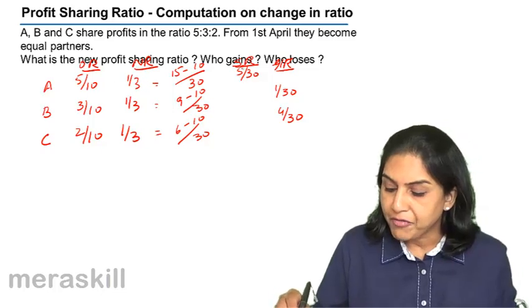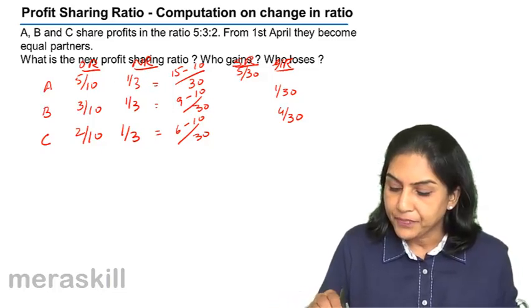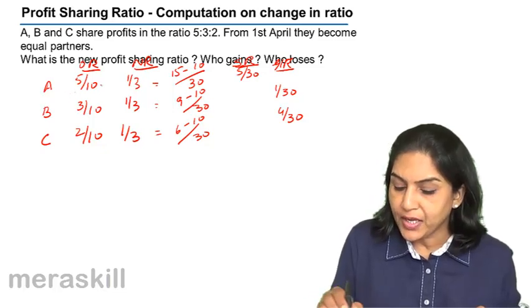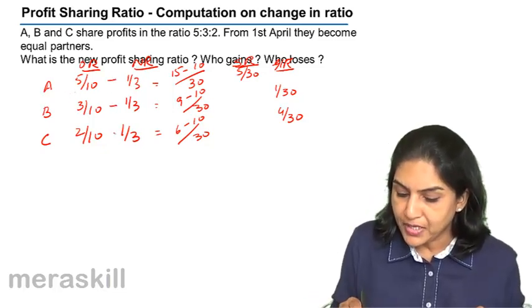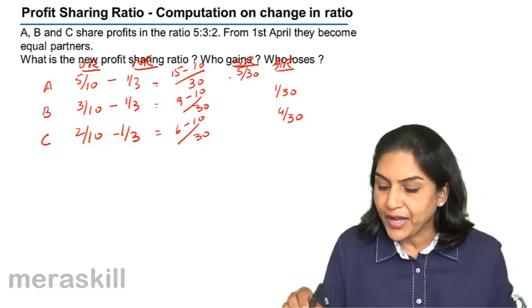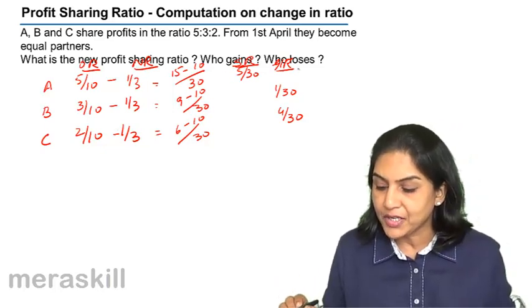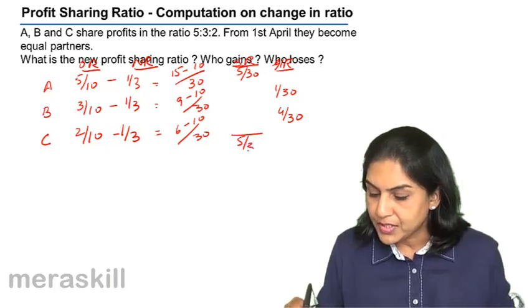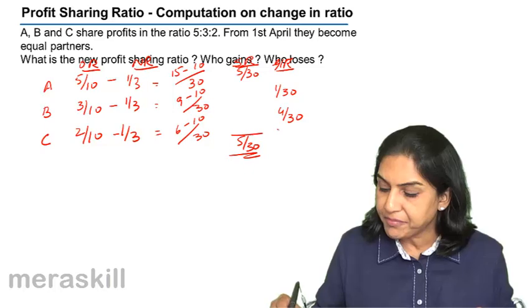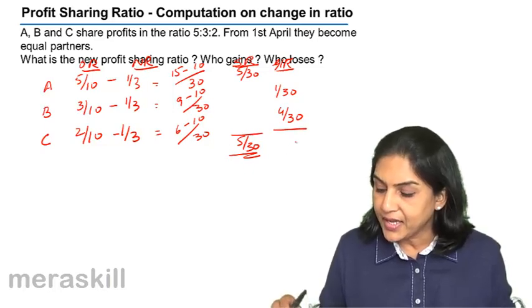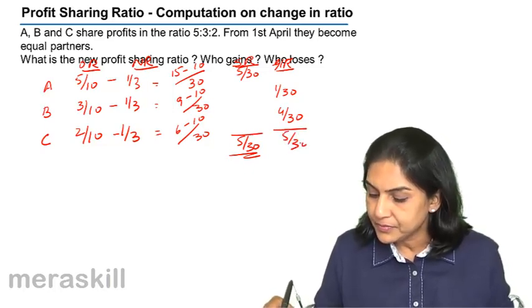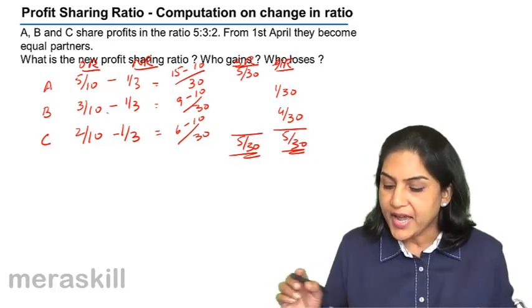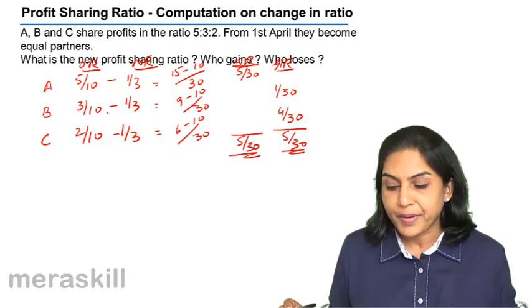Old ratio more, 5 by 30. Old ratio more, new ratio less in the case of A only. If I take old ratio minus new ratio, what I get is either the sacrificing ratio or the gaining ratio. This is sacrifice by A is 5 by 30. The gain is B has gained by 1 by 30 and C has gained by 4 by 30.